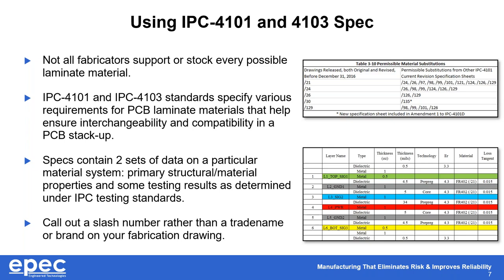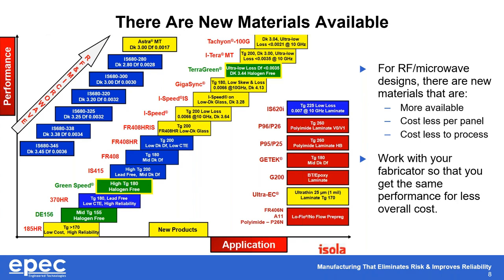Rather than calling out a specific brand, referencing the slash number is the best way for your supplier to get you what you need. Also, it used to be that for RF, microwave, high-speed, high-technology PCBs the main player was Rogers. However, if you work closely with your manufacturing service, you'll find that Isola has come out with some really good high-speed brands that cost less per panel, are more available, and can be delivered faster than Rogers. Work with your fabricator on high-speed materials.